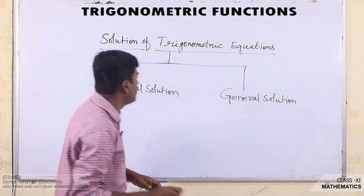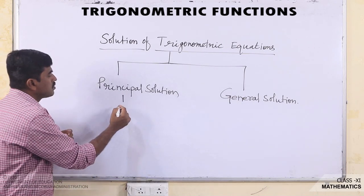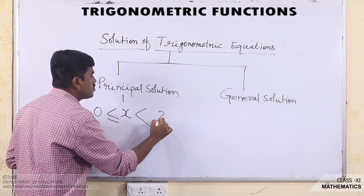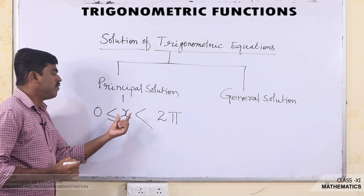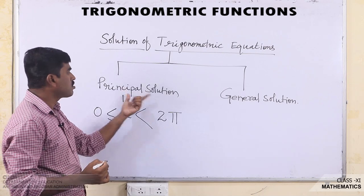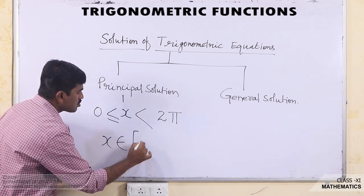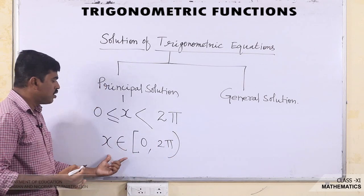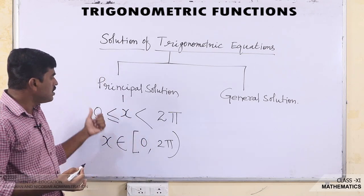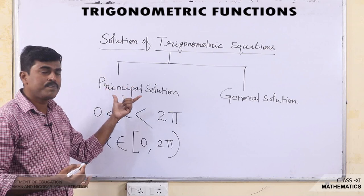Let us discuss what is meant by the principal solution. The principal solution is the value of the variable x where x is greater than or equal to 0 and less than 2π. So the principal solution always belongs to the interval [0, 2π), where 0 is also included.